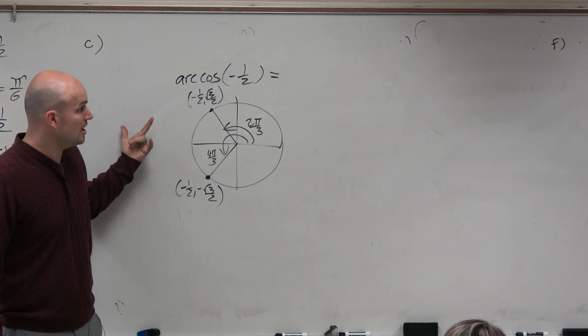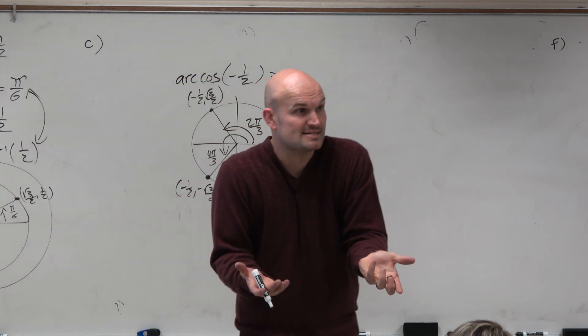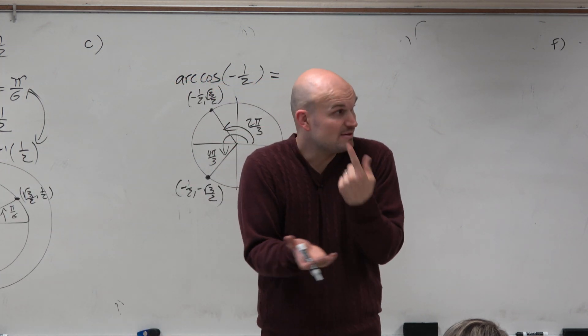So now we just need to say, all right, well, then the arc cosine of negative 1 half, which one is it? It can't be both of them. It has to be one of them.